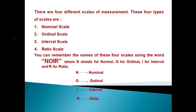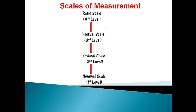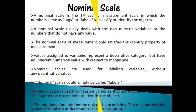The four different scales of measurement are nominal, ordinal, interval, and ratio scale. You can remember the names using the word NOIR. This is a diagram showing the scales of measurement: nominal scale is the first level and simplest, followed by ordinal scale as the second level, interval scale as the third level, and ratio scale as the fourth level.